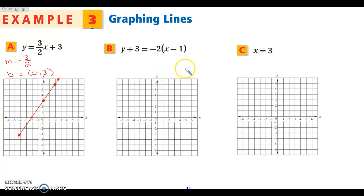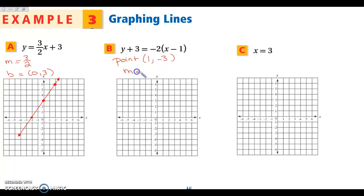Now let's see what happens when we are in point-slope form. My point on the line is (1, -3) — remember, since it's x minus x1 and y minus y1, the positive values come from subtracting a negative. My slope is negative 2. This video is about to run out — go ahead and pause here and switch over to part 2 of the video. I promise it's just finishing up those two examples.